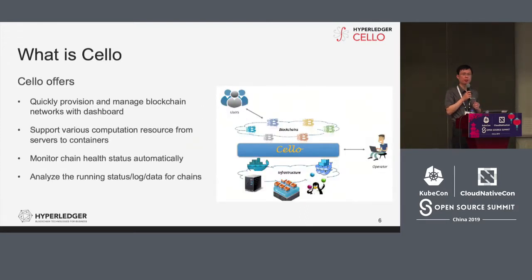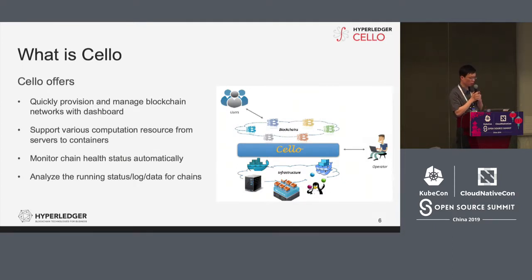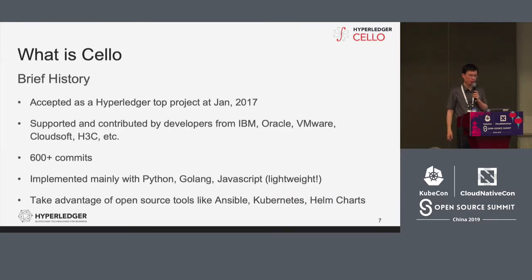Cello can help in the following areas. Firstly, it can quickly provision and manage blockchain networks with a dashboard — a good, user-friendly dashboard. Cello can support various computation resources such as Docker, Docker Swarm, Kubernetes, vSphere, and others. Also, it can monitor the chain health status automatically, the operation status, and the log analysis. We hope Cello can resolve these platform challenges.